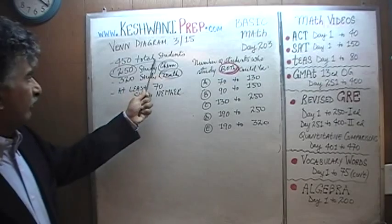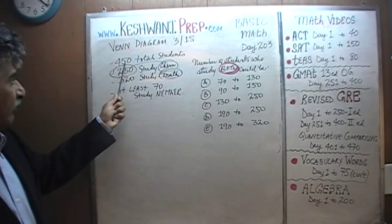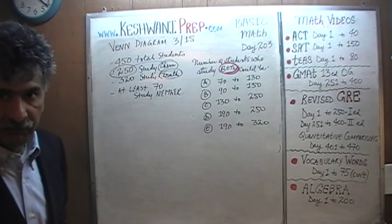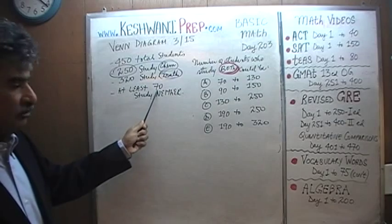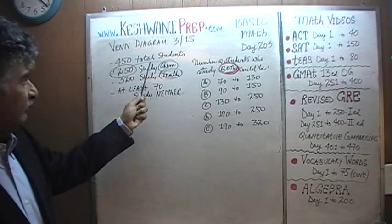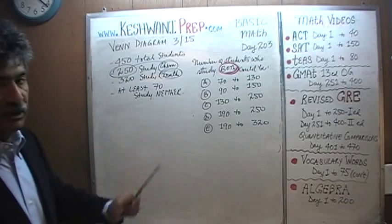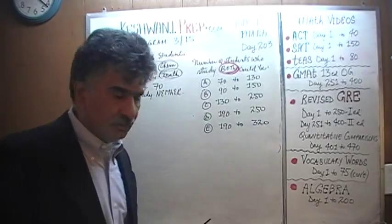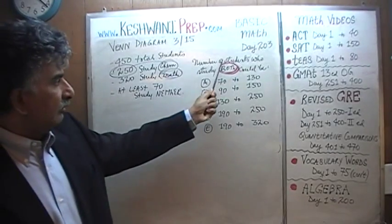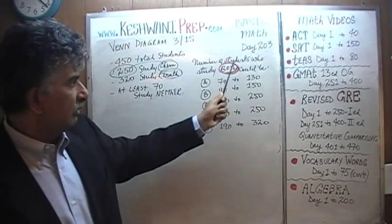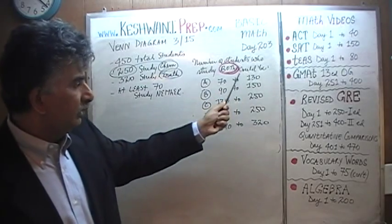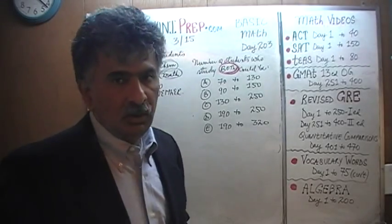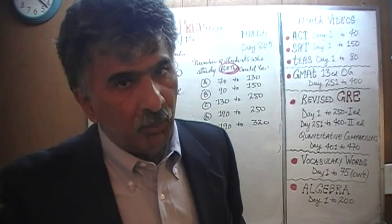We are told that we have a group of 450 students. Out of those 450 students, 250 study chemistry and 320 study mathematics. We are further told that at least 70 of these students study neither chemistry nor mathematics. The question is: based on what we are told, the number of students who study both could be which one of these five ranges?